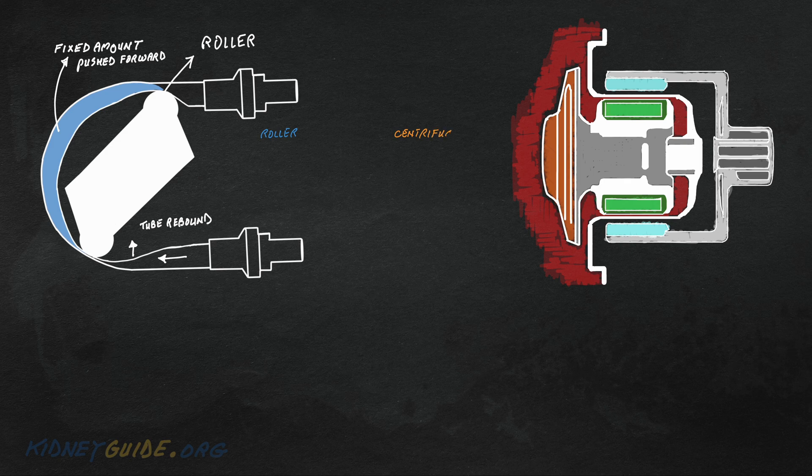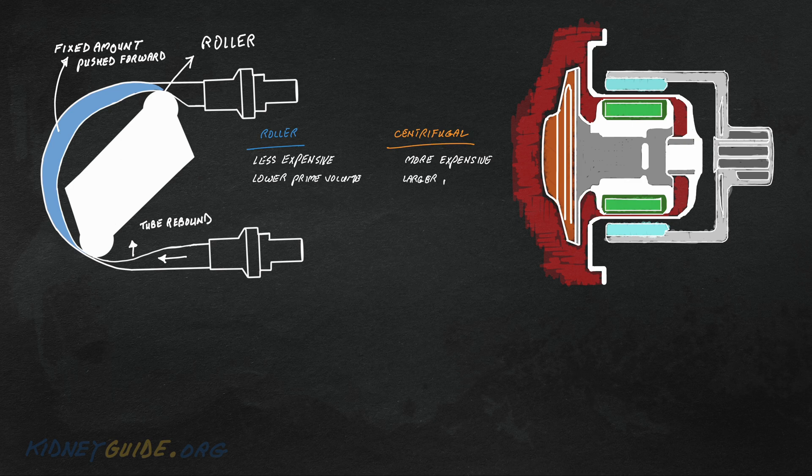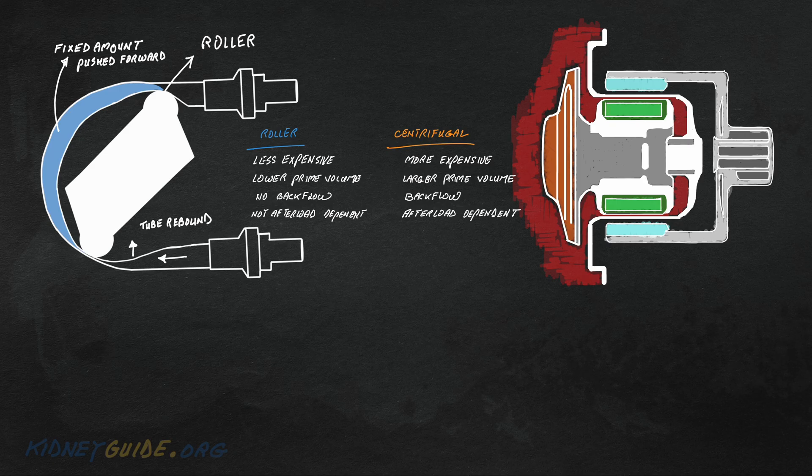When we compare roller to centrifugal pumps, they are cheaper and need less blood for priming. They are also constant volume pumps, which means they maintain constant speed and flow regardless of afterload pressure.